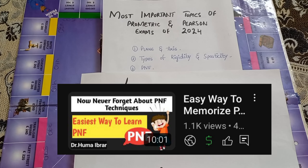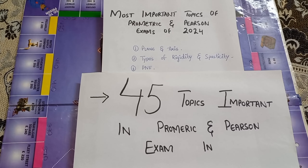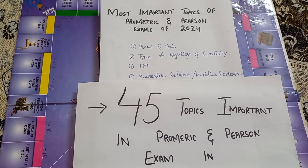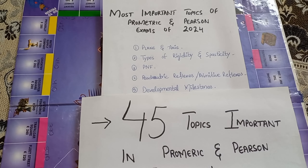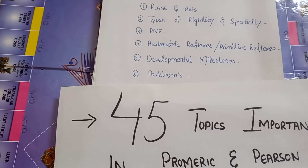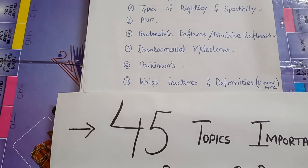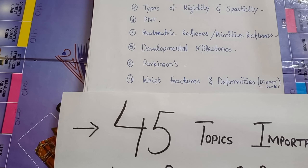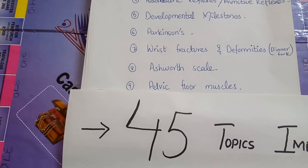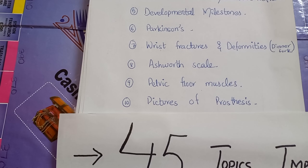A lecture on PNF is also available on my YouTube channel and the link is given in the description box, kindly check it out. Number four is pediatric reflexes or primitive reflexes. Number five is about developmental milestones. Number six is about Parkinson's. Number seven is about wrist fractures and deformities, for example Dinner Fork deformity. Number eight is about the Ashworth scale. Number nine is pelvic floor muscles. Number ten is pictures of prosthesis.